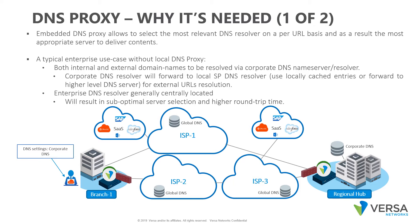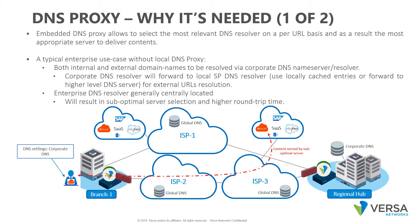The DNS settings for that corporate user point to the corporate DNS server, which can be provided either by an explicit proxy configuration or by using a PAC file. To get access to Office 365 content, the user will send a DNS request to the corporate DNS, which will subsequently forward it to a global DNS unless it has that information already cached. The list of IP addresses returned will likely point to an Office 365 location closest to the global DNS from ISP3, resulting in the selection of a suboptimal server with a higher round trip time.